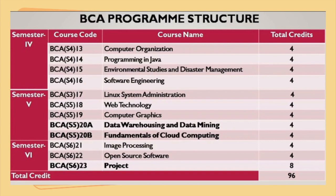In the fifth semester, we have courses like Linux system administration, web technology, and computer graphics. The fourth course in the fifth semester is an elective and learners can choose between data warehousing and data mining, and fundamentals of cloud computing. In the sixth semester, we have two courses: image processing and open source software, and one project work.